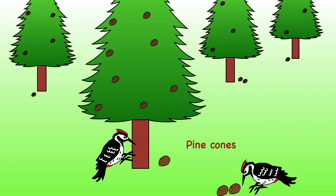Deciduous trees don't provide much shelter in the winter because all the leaves are gone from the trees, so animals sometimes store food for the winter or they hibernate. If you want to find out more about hibernating animals, I have a video for you to watch and I will put the link in my description.